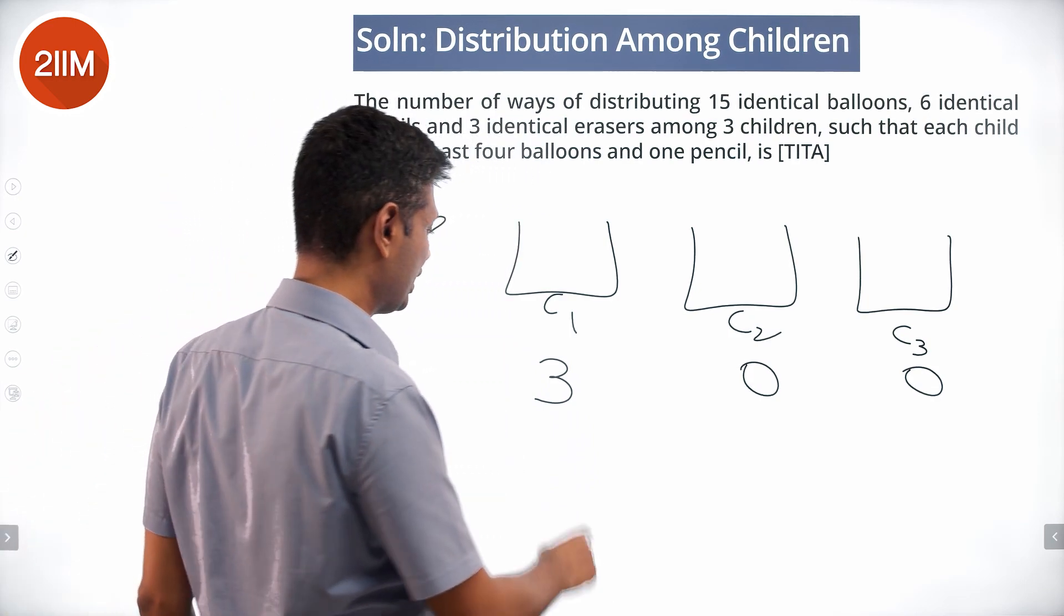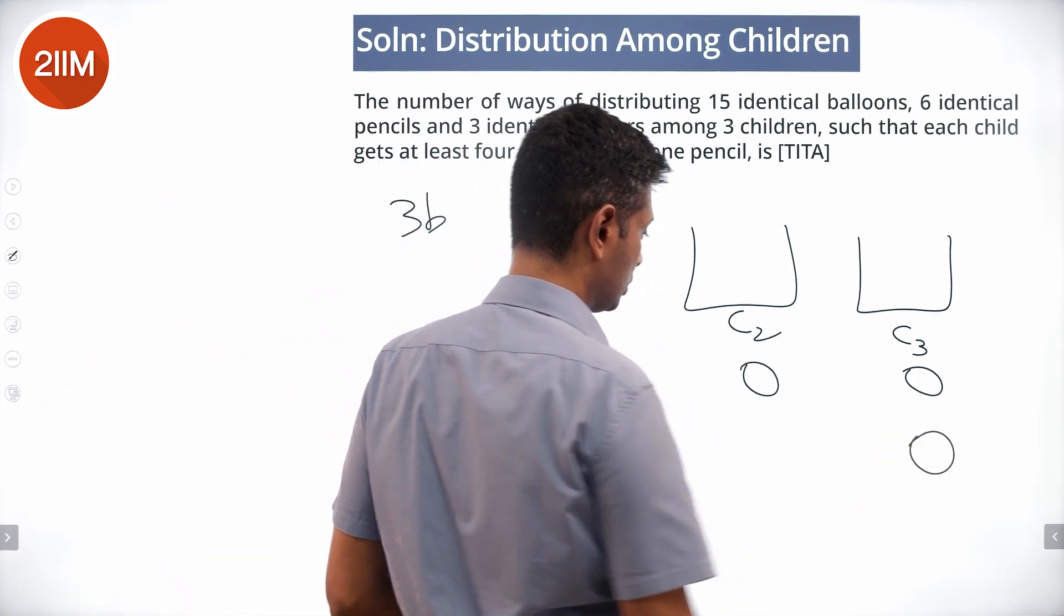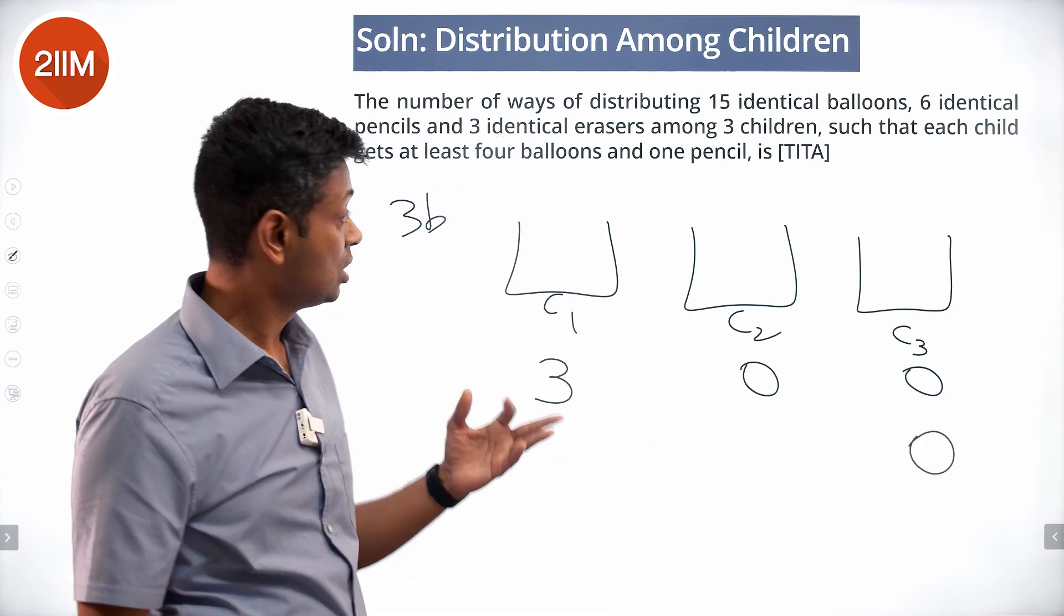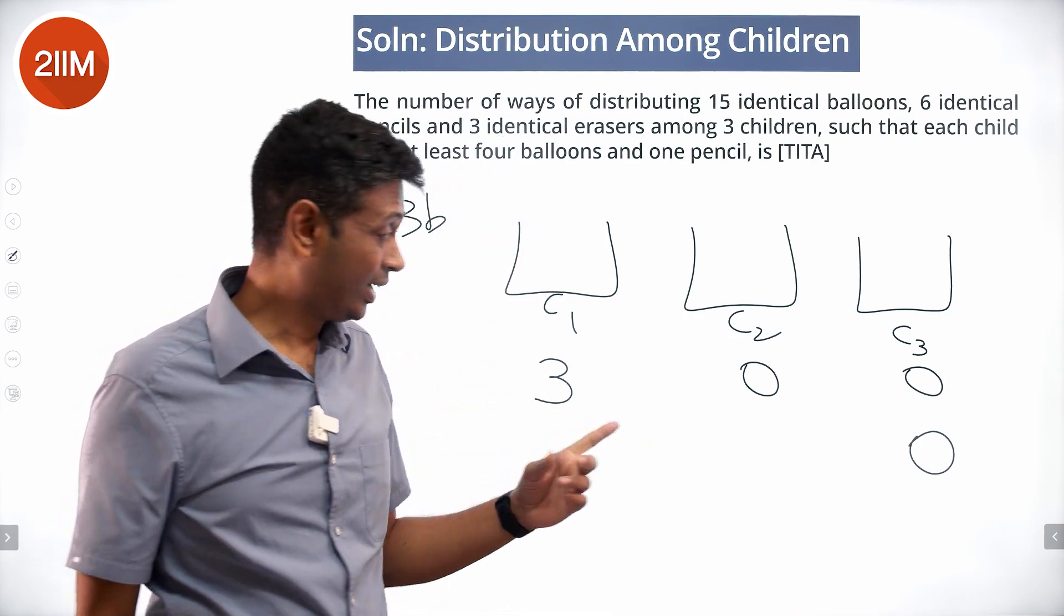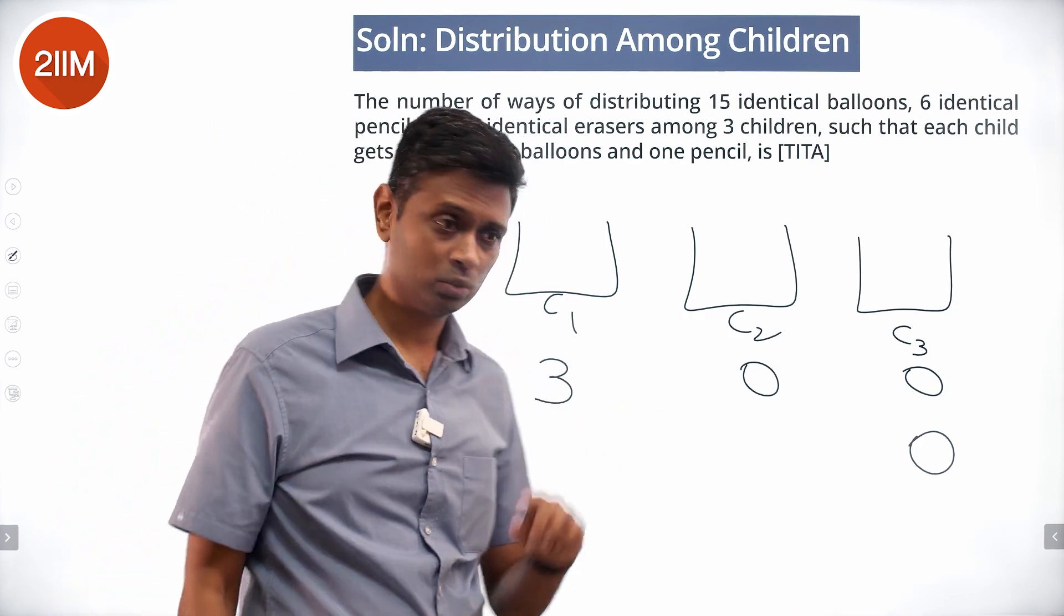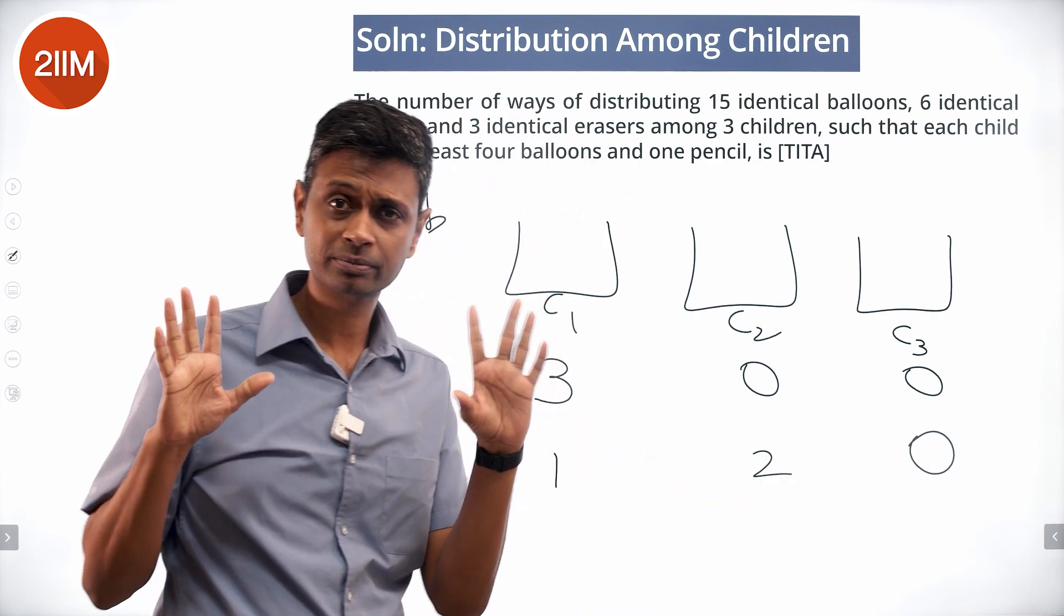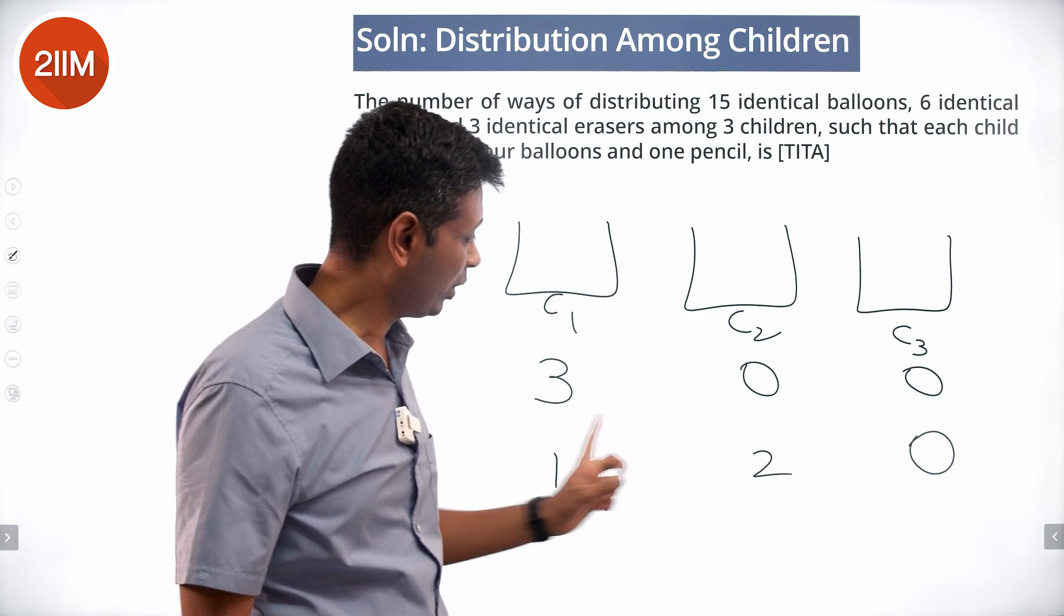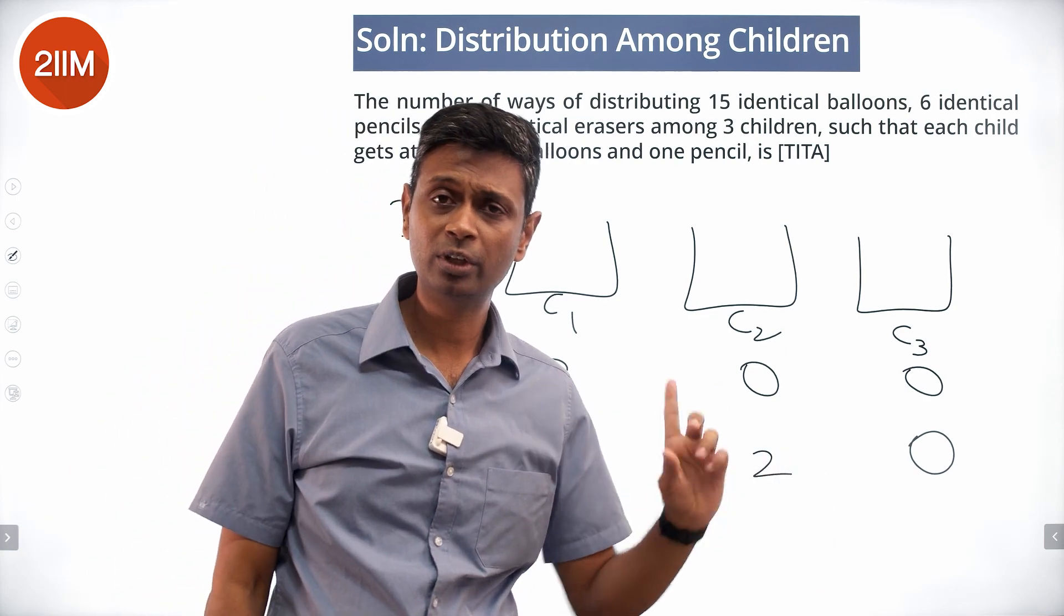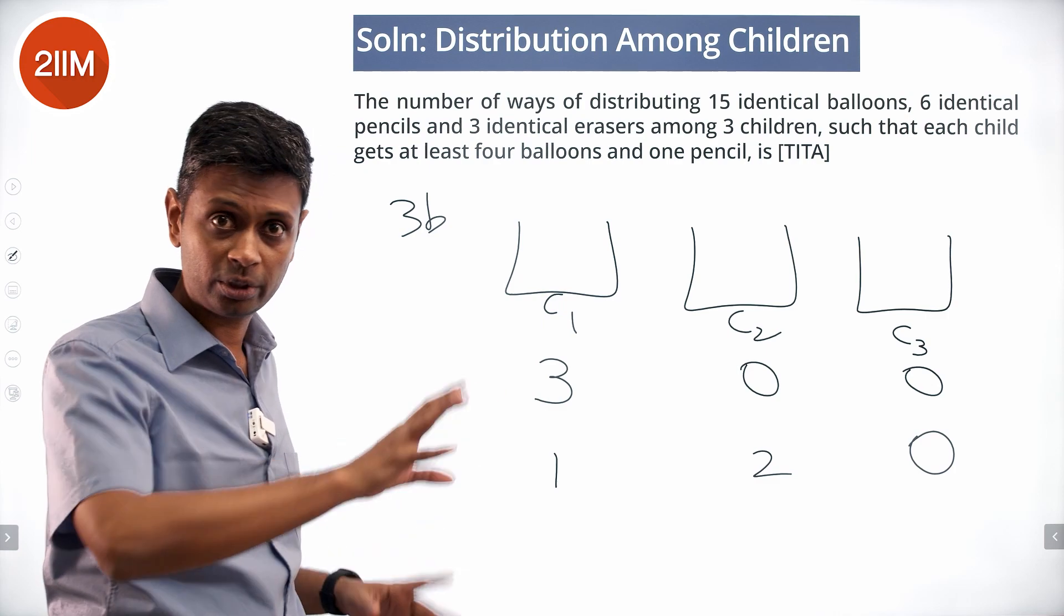Now only 1 child gets nothing. The other 2 get something. Out of the 3, other 2 get something. So it will be 1 and 2. 1 here, 2 here, no other possibility. So this could be 1, 2, 0, or 1, 0, 2, or 2, 0, 1, or 2, 1, 0, etc. That's one possibility.